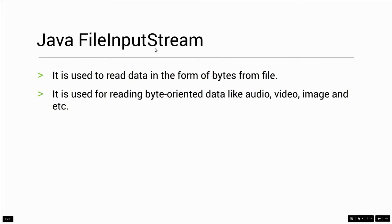So, file input stream is used to read data in the form of bytes from a file. In the form of bytes — this is the important point.